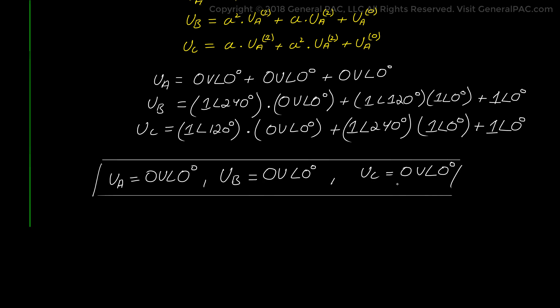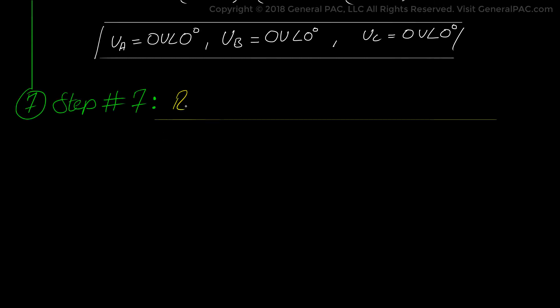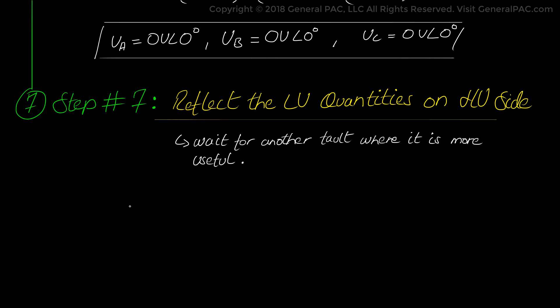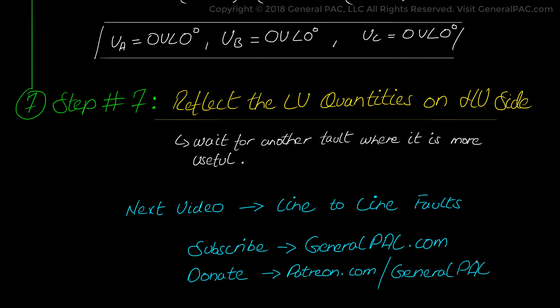So that's the bonus step in between step six and step seven. Now in step seven we can easily take the current and voltage quantities on the low voltage side of the transformer which is the 13.8 kV side and we could easily reflect that quantity on the high voltage side. However we will do this step in another fault that is more useful. So in the next video we will calculate the line to line fault and follow the same methodology. If this video tutorial was useful for you please consider subscribing to GeneralPAC.com and donating through Patreon.com/GeneralPAC. Thank you.